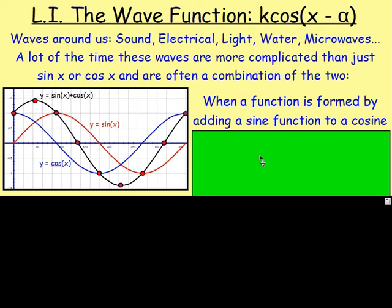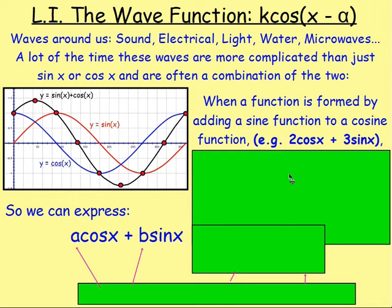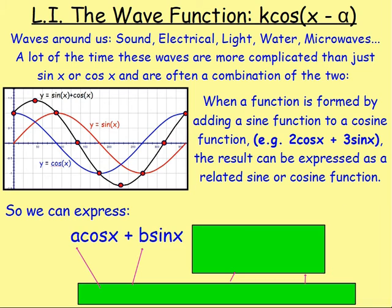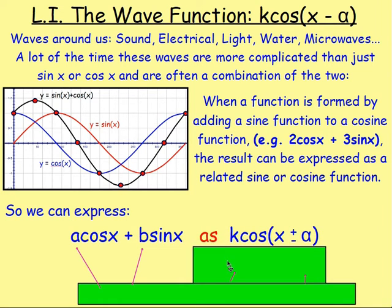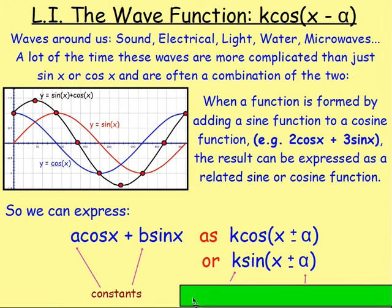When a function is formed by adding a sine function to a cosine function — for example y equals two cos x plus three sin x — the result can be expressed as a related sine or cosine function. If you have a cos x plus b sin x, you could write it just in terms of cos as k cos x plus or minus alpha, or just in terms of sine as k sin x plus or minus alpha. The values of a and b are going to be constants.